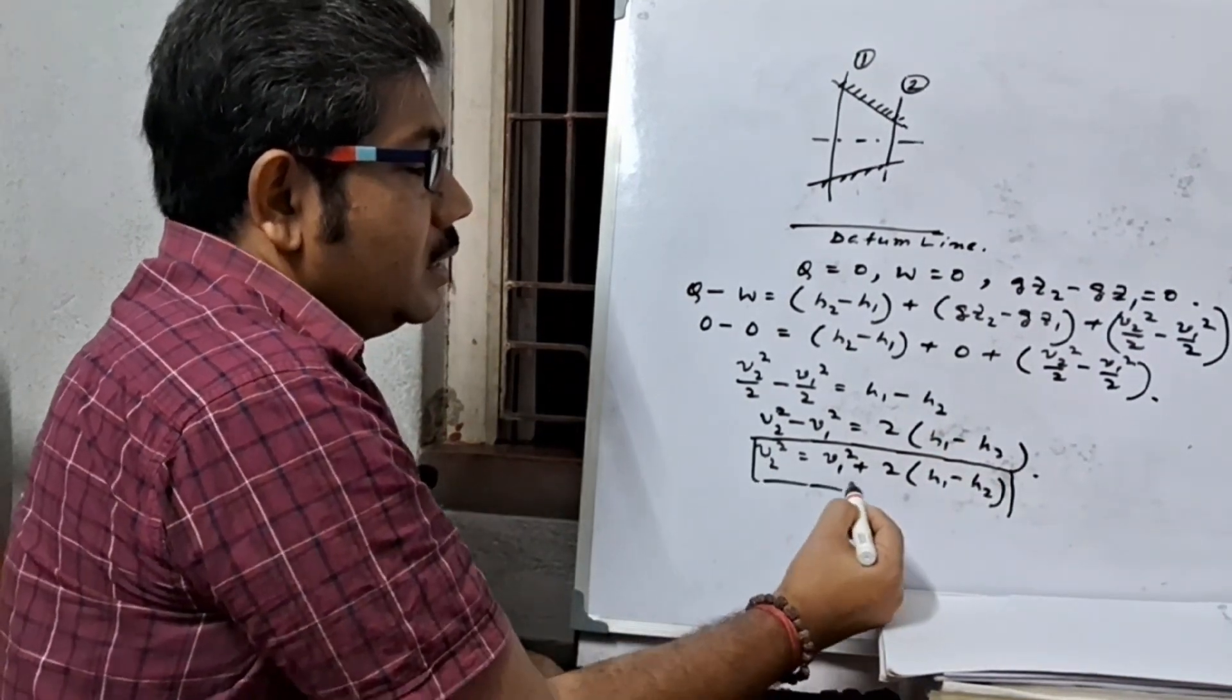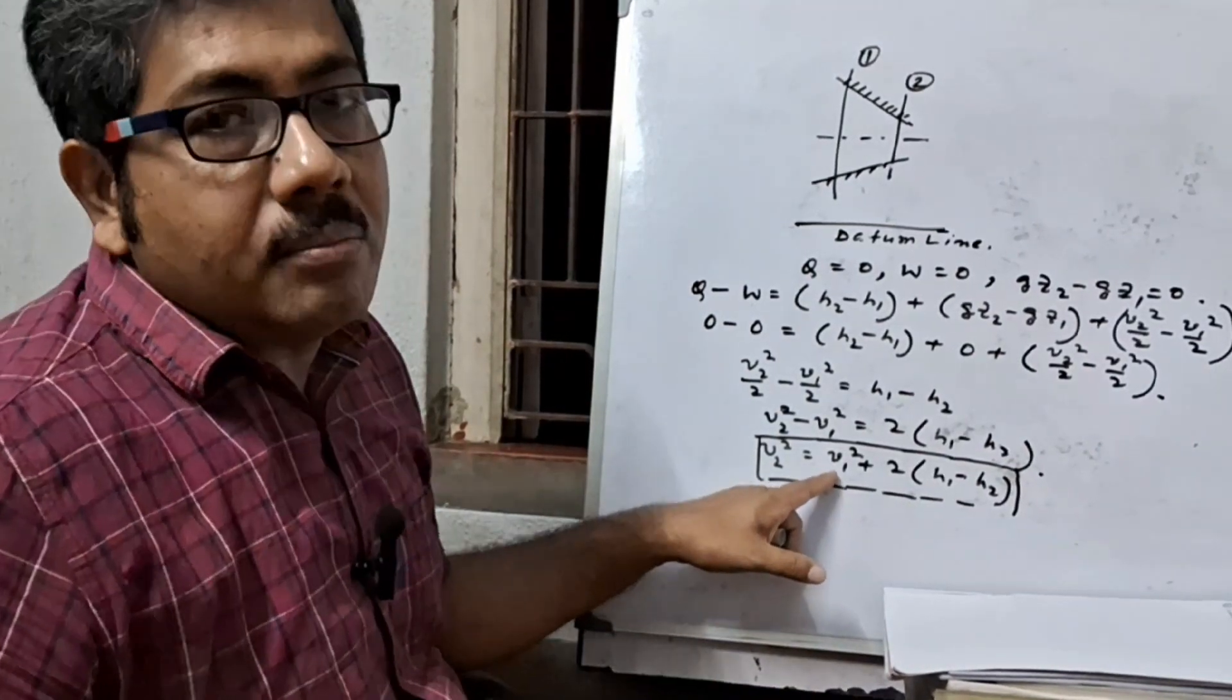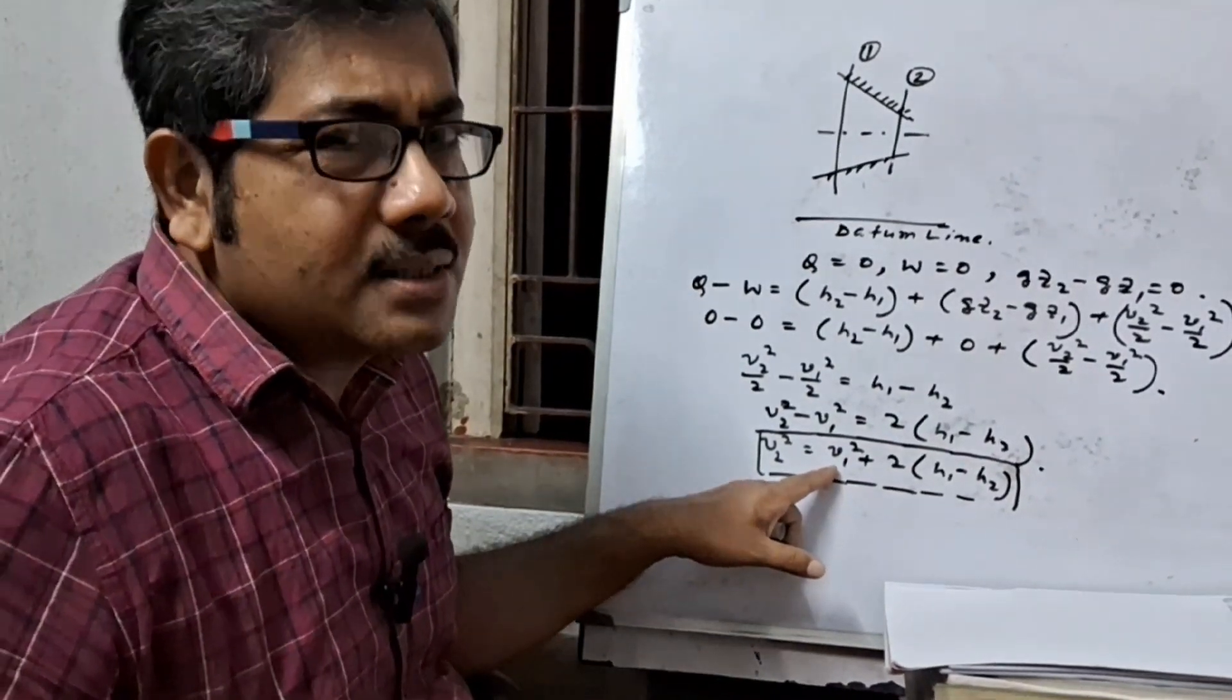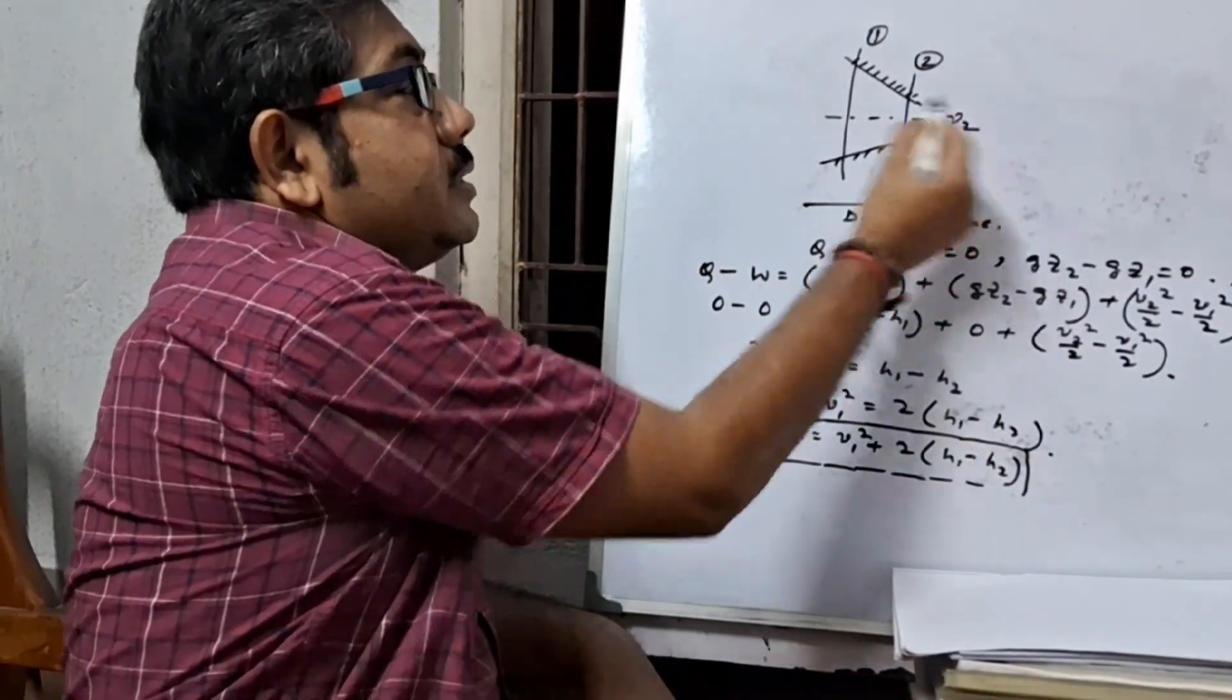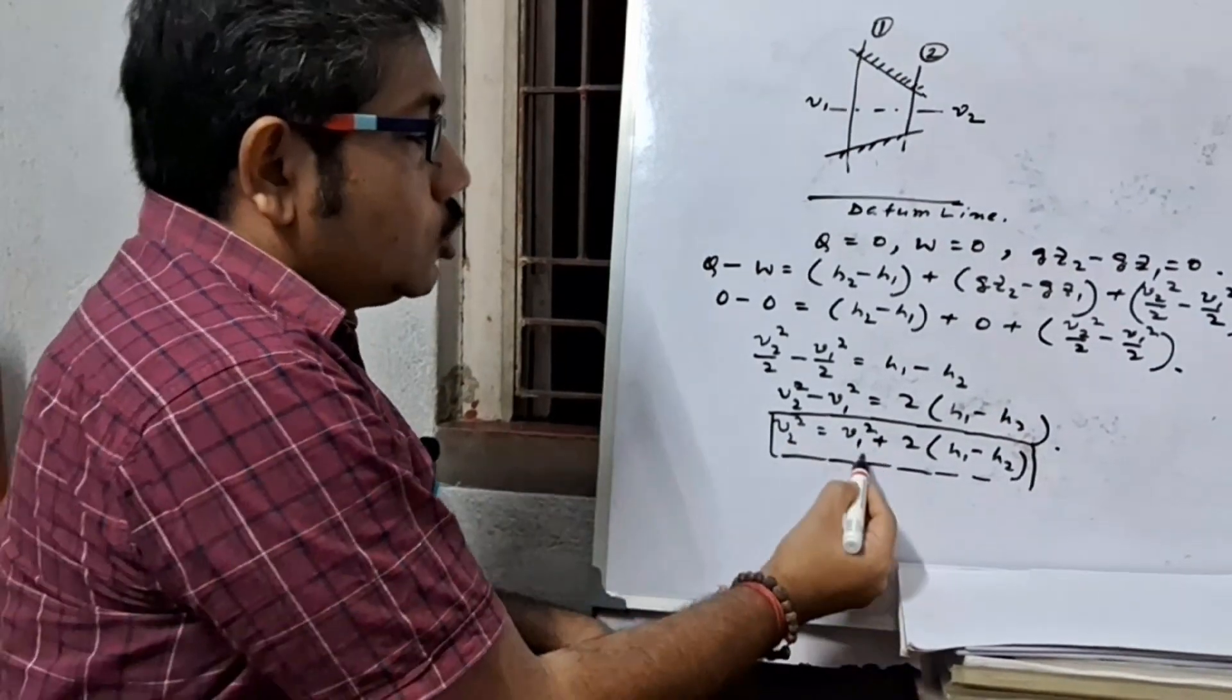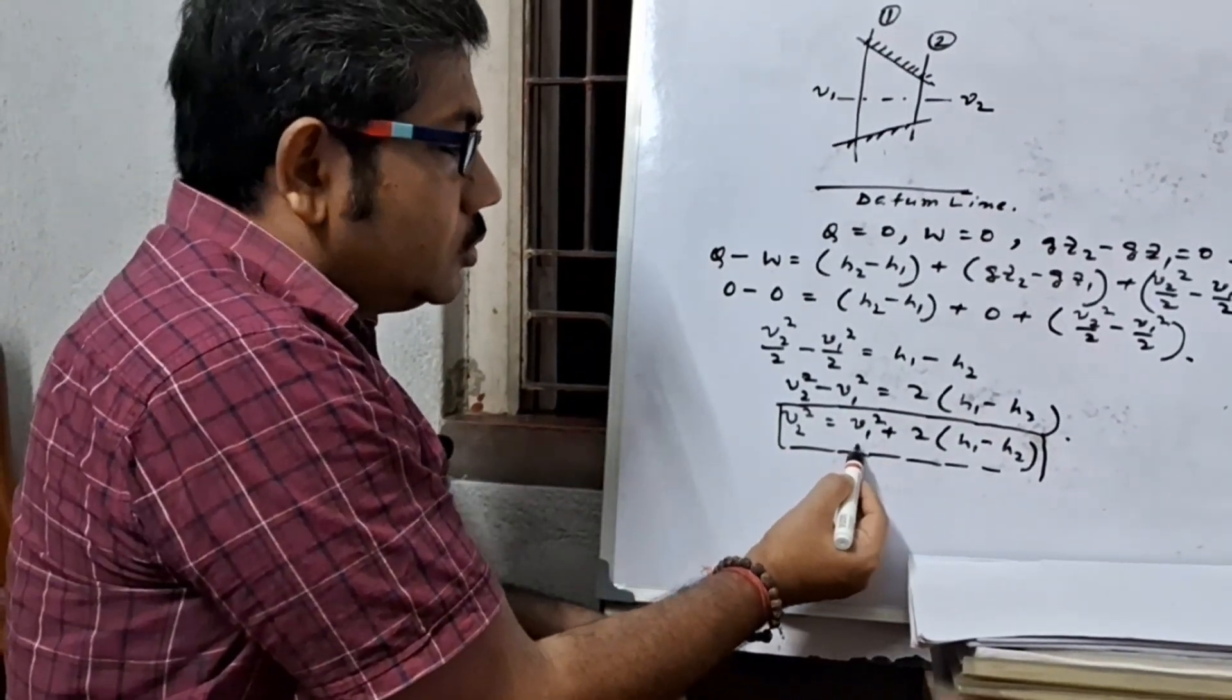And here v1 is the velocity at approach, which is very small with respect to the velocity at discharge. So it may be said that v1 equals 0.